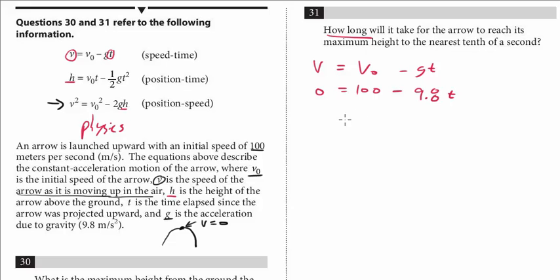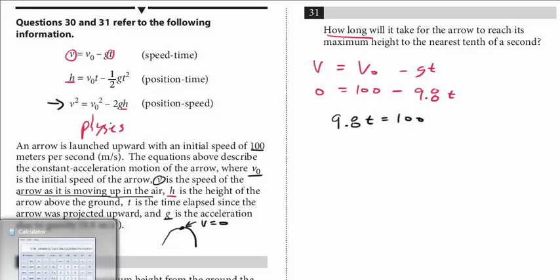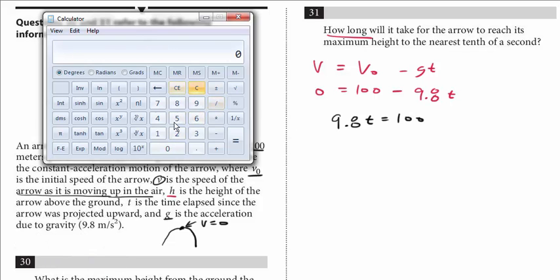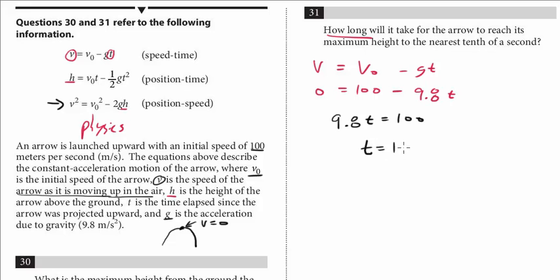I'm just going to add 9.8t to both sides. So 9.8t equals 100. We want the nearest tenth of a second, so it's going to be 100 divided by 9.8. And that comes out to looks like 10.204. And so the answer to the nearest tenth is 10.2.